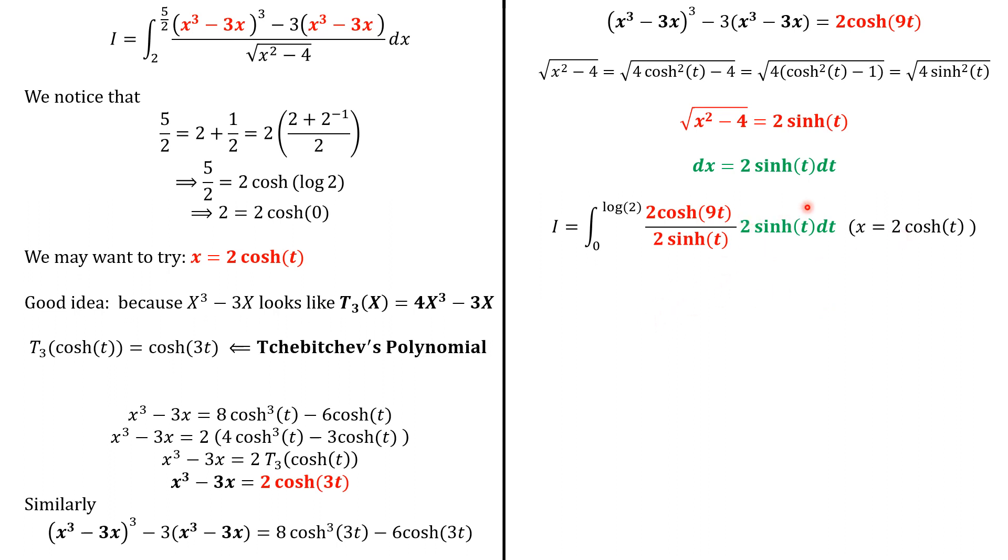So the sinh(t) will neutralize each other so that i is the integral from 0 to log 2 of 2 cosh(9t). This is now easy because we know the antiderivative of the cosh function, which is sinh. So actually, it is (2/9) sinh(9t) evaluated from 0 to log 2. And it rewrites as follows.